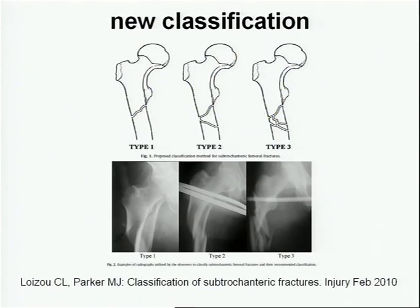There's a new classification published in February this year in Injury, which respects the Latin prefix 'sub,' with type 1, 2, and 3 all below the lesser trochanter. But in their clinical examples, they already have an inclusion of the trochanteric area. So sub-trochanteric fractures are rare, I guess.